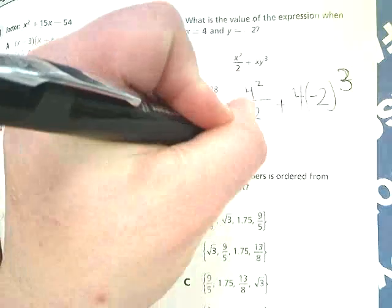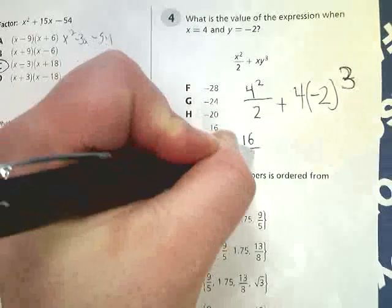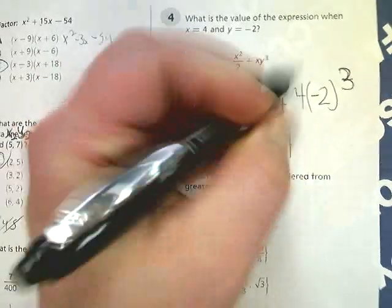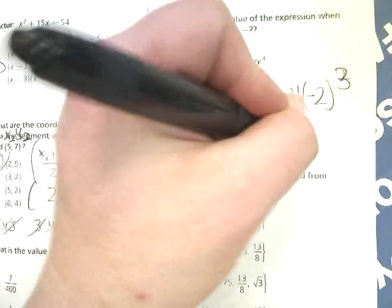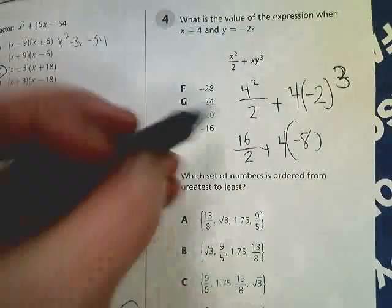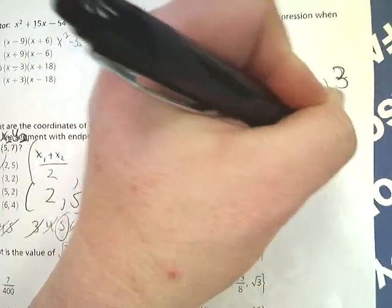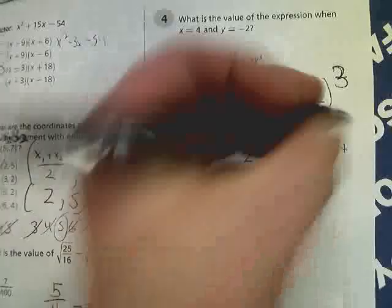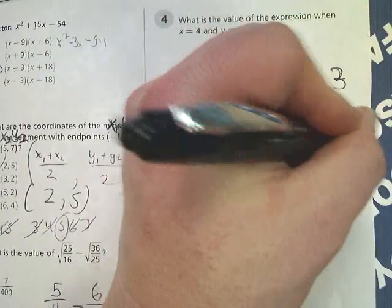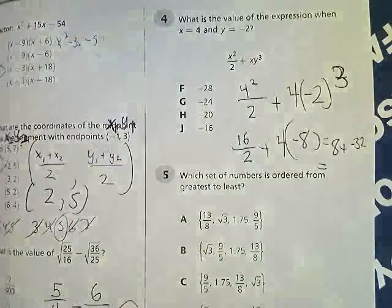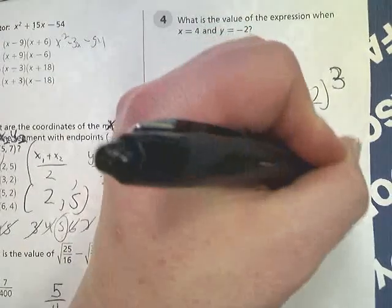4 squared is 16 over 2. Negative 2 to the third power is negative 8. So I do 16 divided by 2, which is 8, plus 4 times negative 8 is negative 32. And my final answer is going to be negative 24.